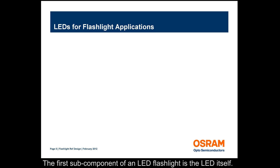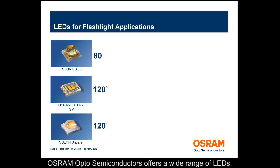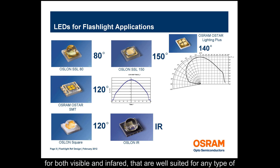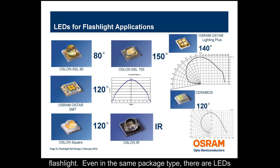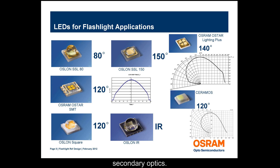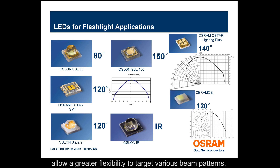The first sub-component of an LED flashlight is the LED itself. Osram Opto Semiconductors offers a wide range of LEDs for both visible and infrared that are well-suited for any type of flashlight. Even in the same package type, there are LEDs with different radiation characteristics to suit different types of secondary optics. The ability to have different viewing angle LEDs will allow greater flexibility to target various beam patterns.